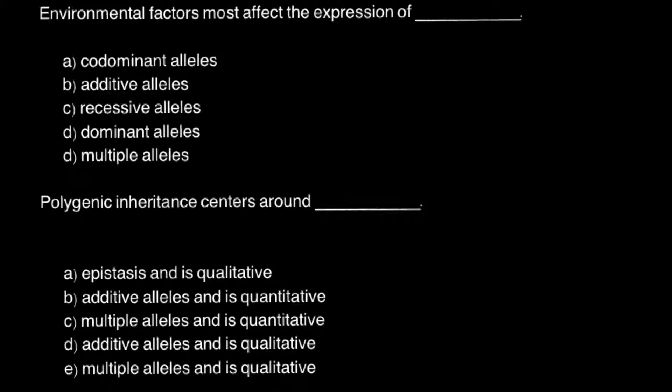So here's the first question: environmental factors most affect the expression of — and here are five answers to choose from. Answer A is codominant alleles. If you do not remember what that is, here's my explanation.